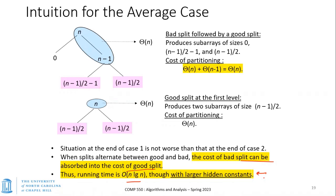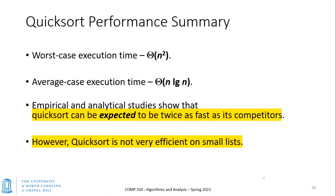So quicksort has this property: worst case is Θ(n²), but the average case and most typical cases give n log n. Empirical studies have shown quicksort is actually quite good in actual implementations — the constants associated with quicksort are quite good and it's a very tight loop. Compared to other n log n algorithms, quicksort empirically performs better.